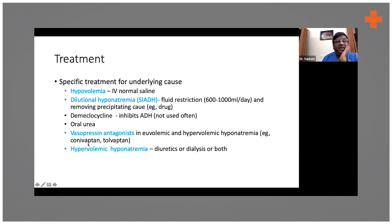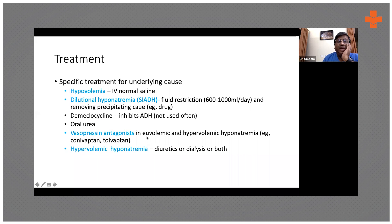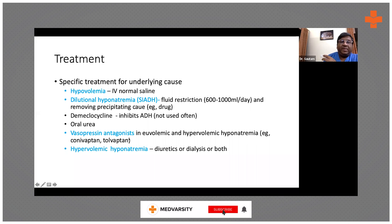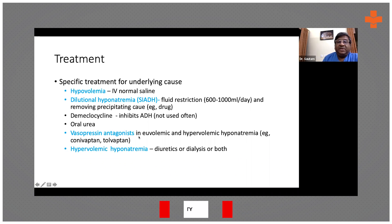The vasopressin antagonists include Conivaptan, which is an intravenous preparation, and Tolvaptan, which we use most of the time. Tolvaptan comes in 15 mg tablets and can be given once a day. Most importantly, do not use these in patients with hypovolemic hyponatremia — someone having diarrhea due to gastroenteritis needs IV fluids, not Tolvaptan. These can be used in SIADH, which is euvolemic hyponatremia, or in hypervolemic hyponatremia.